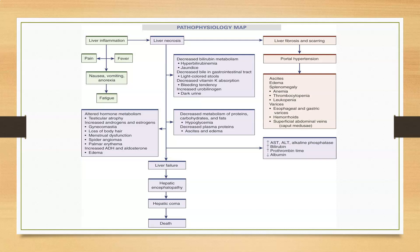Looking at the pathophysiological map, there is first liver inflammation, further causing liver necrosis, and then liver fibrosis and scarring. Liver inflammation can lead to pain, fever, nausea, vomiting, anorexia, and fatigue. Necrosis causes decreased bilirubin metabolism, hyperbilirubinemia, jaundice, decreased bile in the gastrointestinal tract, light-colored stools, decreased vitamin K absorption, and bleeding tendency.